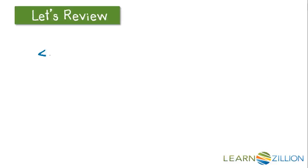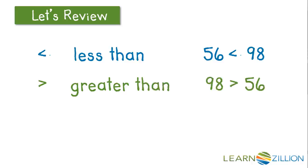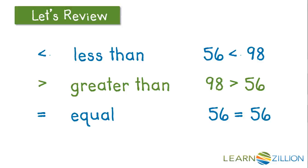Let's review our symbols. Less than shows that the first number is smaller than the second. 56 is less than 98. The greater than symbol shows that the first number is greater than the second. 98 is greater than 56. And the equal sign means the same as. 56 is the same as 56.